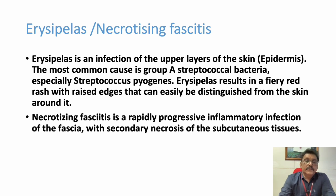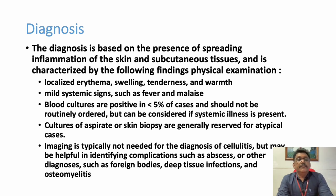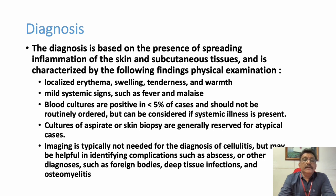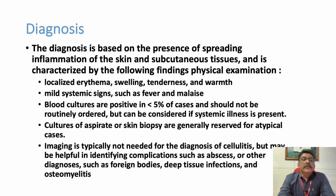Diagnosis in emergency medicine is mainly by clinical features; detailed investigations are not always feasible in the ER. Localized erythema, swelling, tenderness, and warmth — all signs of inflammation — can be seen. Mild systemic signs include fever and tachycardia. With deeper infection, more profound signs appear: fever with chills, hypotension, shock, septicemia features like tachycardia and low urine output.